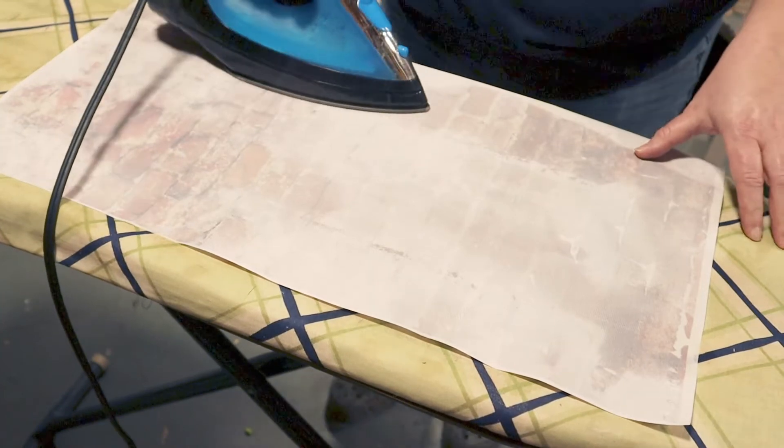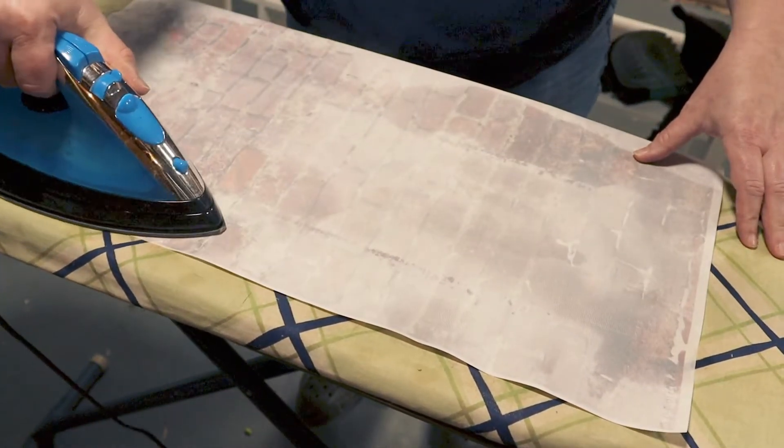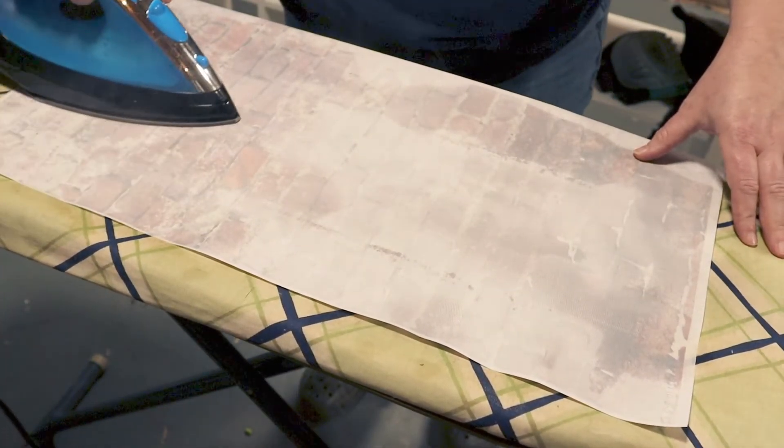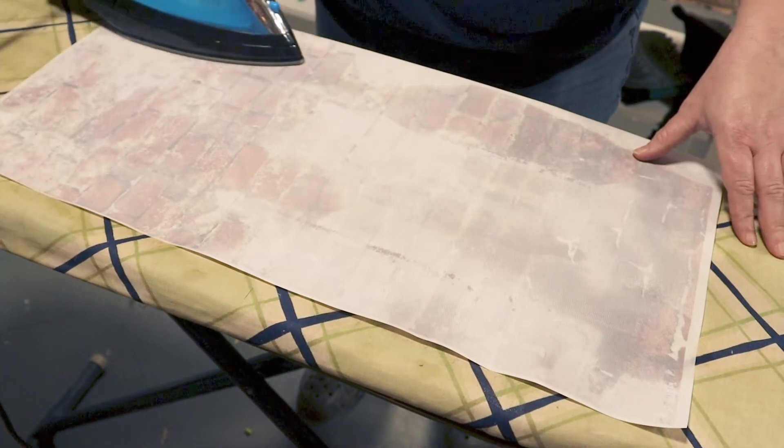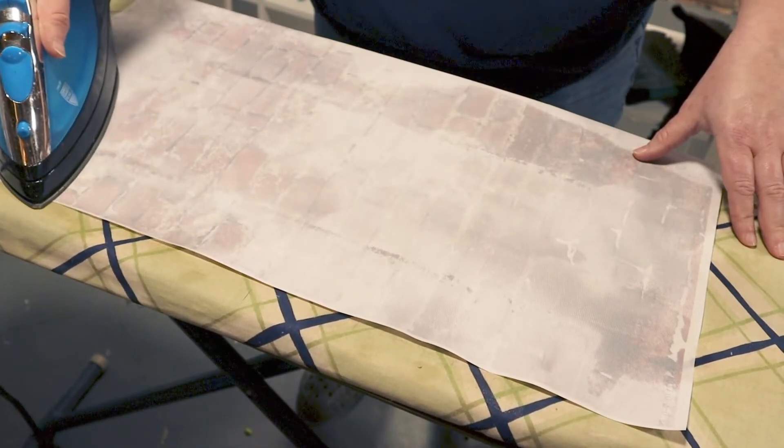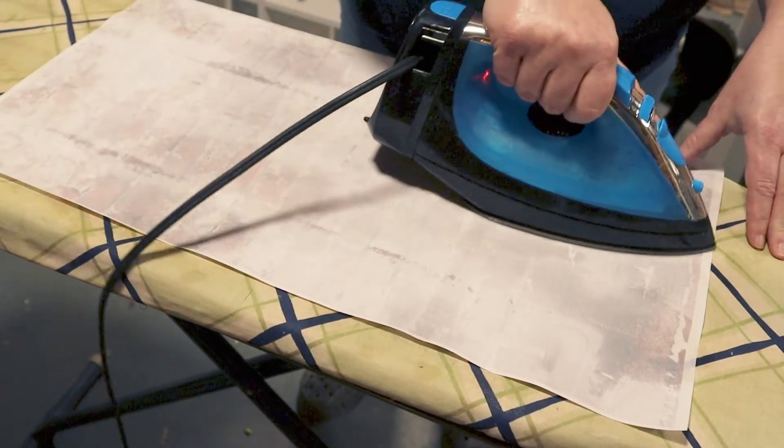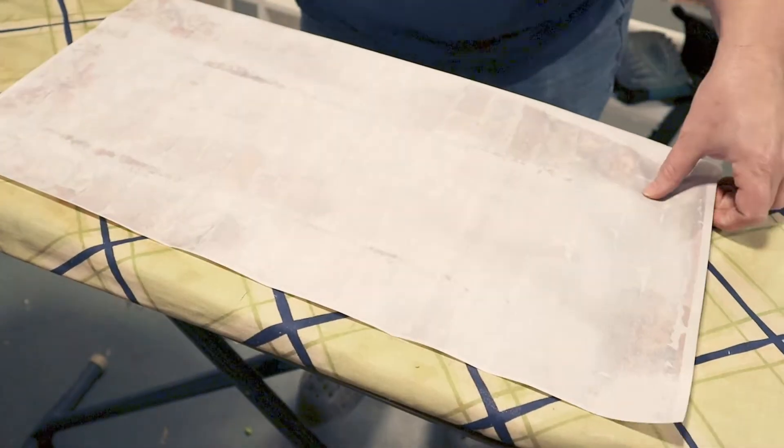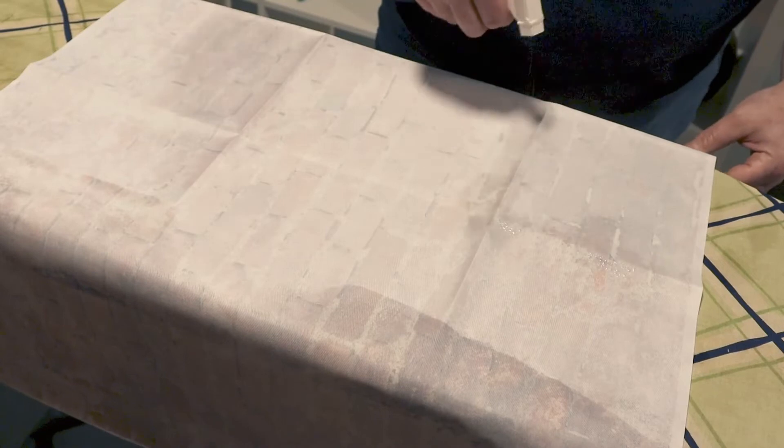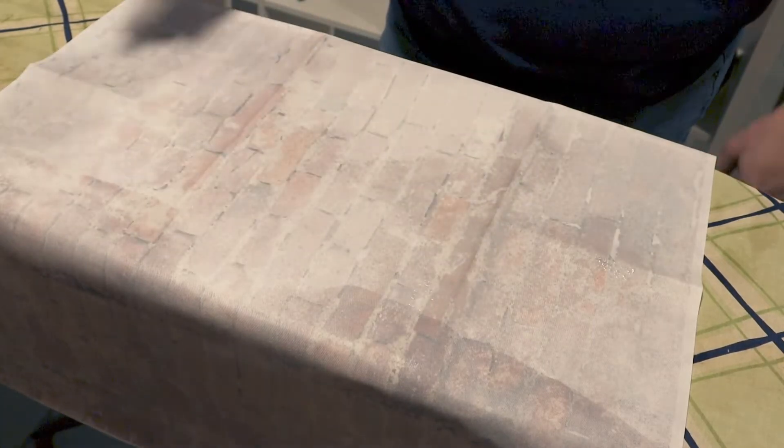The steam setting on your iron is too hot for this kind of fabric, so make sure you do not use your steam setting when doing this. Keep repeating the same process until all of your backdrop is ironed out.